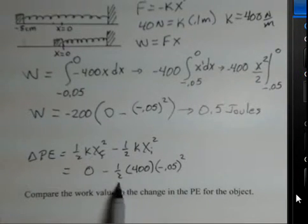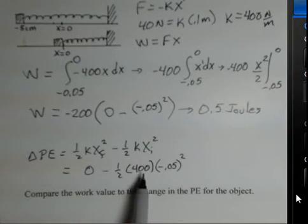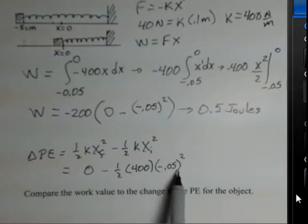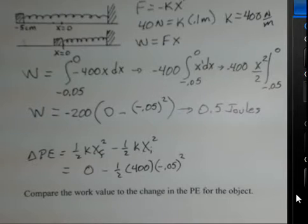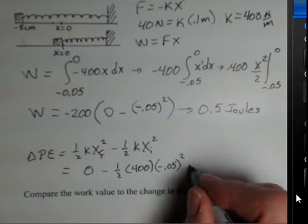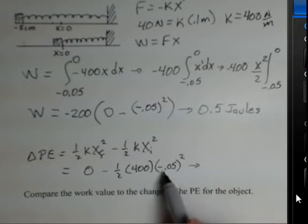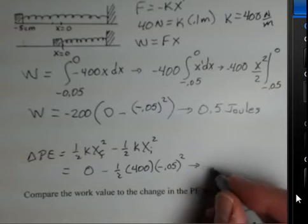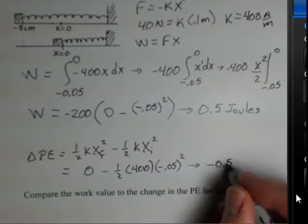And we have to square that. You can see we're getting a similar result. The 2 and the 400 make 200 here. 0.05 squared - it's only that this squared is positive, but I have a minus sign here, so now I get minus 0.5 joules.